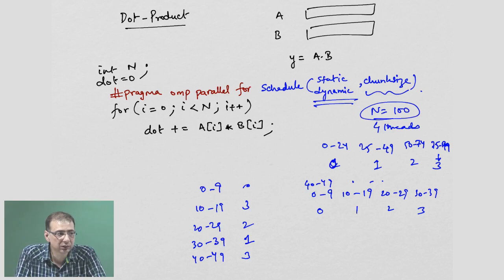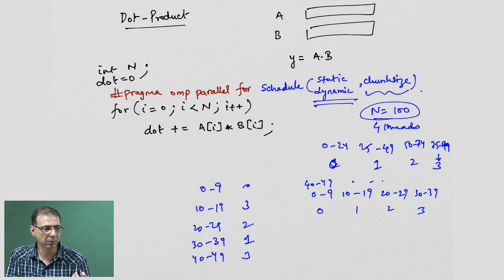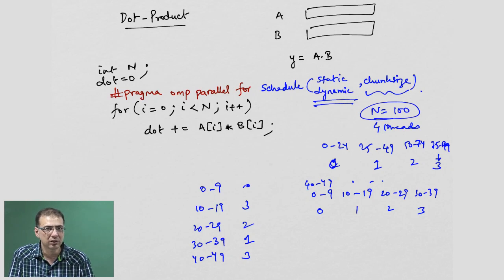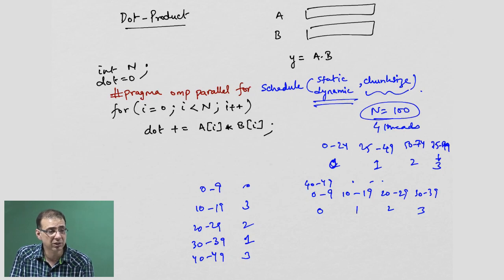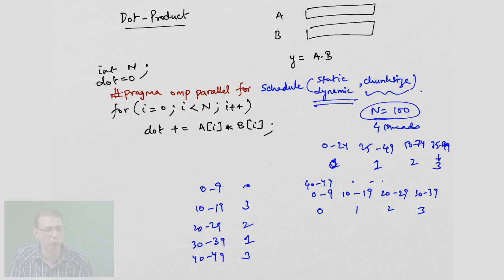You do not want to make the chunk size too small. If you set a chunk size of 1 and each iteration only multiplies 2 numbers, the overhead of allocating work dynamically will be more than the actual computation. So you do not want to set a chunk size that is too small.